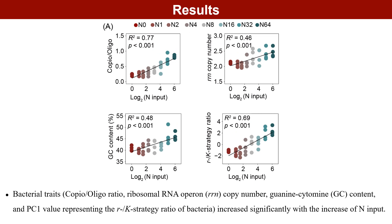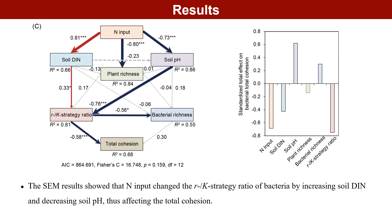We further studied the changes in bacterial traits and found that as nitrogen input increased, the ratio of abundance of copiotrophic to oligotrophic bacteria, rrn copy number, and GC content increased, which were closely related to high nitrogen input. We used the PC1 values of these three trait parameters to characterize the bacterial r/k-strategy ratio and found that the r/k-strategy ratio also increased with increasing nitrogen input. Further, we found through SEM that nitrogen input changed the bacterial r/k-strategy ratio by increasing soil inorganic nitrogen and reducing soil pH, thereby affecting the total cohesion. That is, the change in bacterial network complexity depends on the bacterial r/k-strategy ratio, independent of changes in bacterial richness.